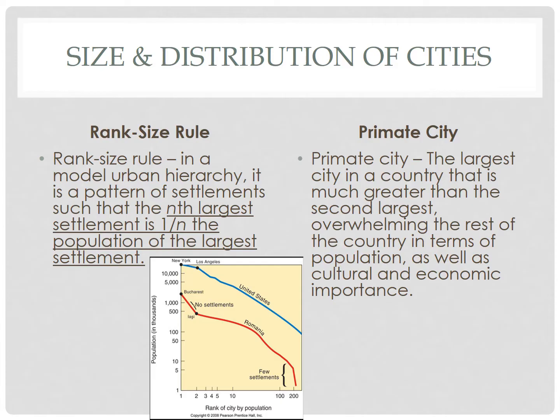So for example, if the largest city is 10 million people, the second largest city in the urban hierarchy should be 5 million, or half the size of the largest. The 5th largest settlement would be 1/5th the population of the largest, or 2 million people. College Board does like to make you calculate settlement size using this formula, so be prepared for that.